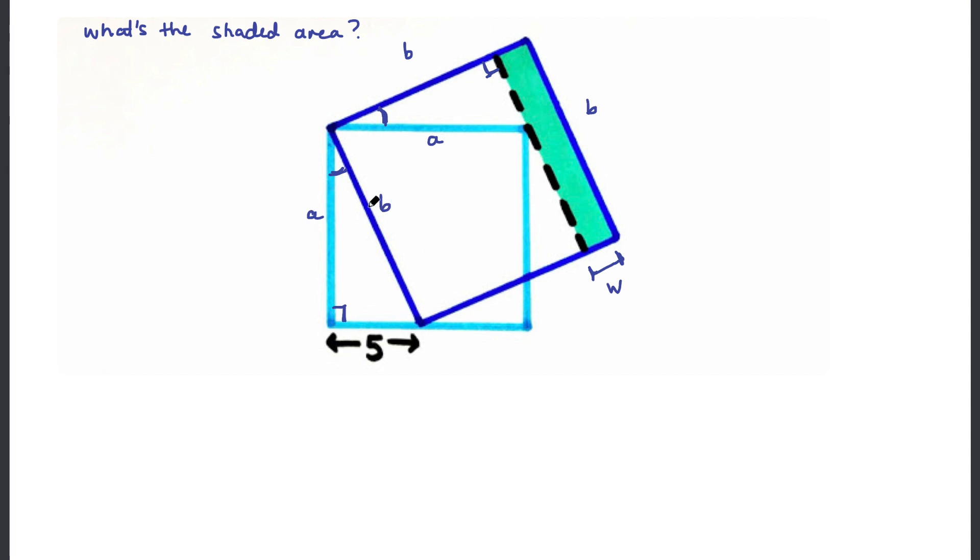The next thing is I'm going to relate these two variables a and b to this length five using Pythagoras. So we can say that because this is the hypotenuse of this right angle triangle, we can say that a squared plus five squared equals the hypotenuse squared, which is b squared. So I've taken these two legs, squared them, and that equals the hypotenuse squared.